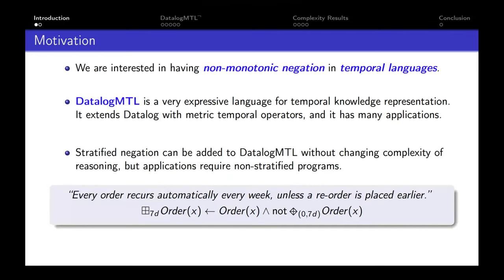DatalogMTL doesn't accept negation, but from our previous work we know that we can extend the language with stratified negation without changing the complexity of reasoning — that is, checking if there exists a model of a program and dataset. However, some applications might require non-stratified programs. For instance, the same retailer may want to say that every order of a product should reorder automatically every week, unless a reorder of the same product is placed earlier. We can express that with this rule; however, the predicate 'order' appears under negation and also in the head of the same rule, so this rule is non-stratified.